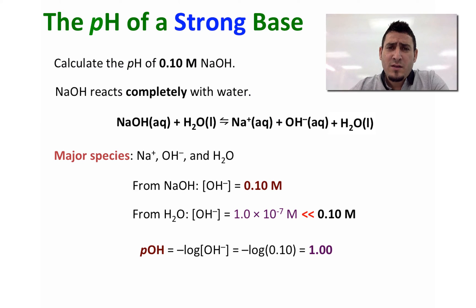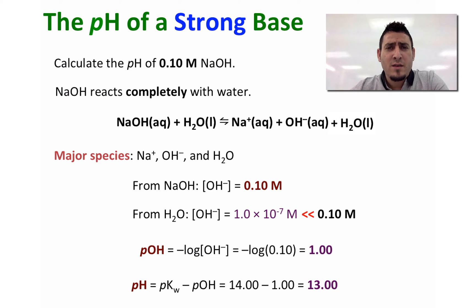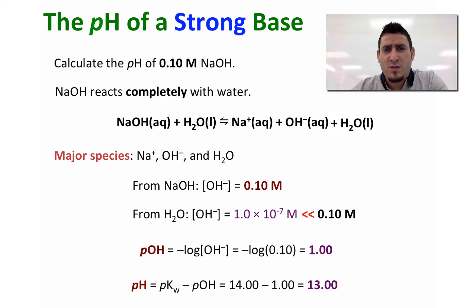Now, what is the relationship between pH and pOH? We know that pH = pKw − pOH. pKw is the −log of the water dissociation constant Kw, and that equals 14. So pH = 14 − 1 = 13.00. Because the solution contains a strong base, the pH is high, equal to 13.